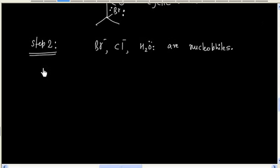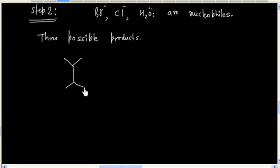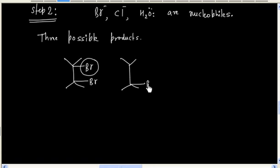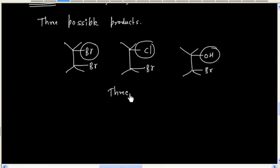So we will have three possible products in this reaction. One product will have bromine attached, another will have chlorine attached, and one product will have an OH group attached. So three products are possible. Basically, the number of nucleophiles will decide the number of products.